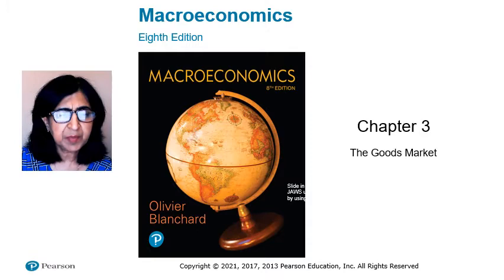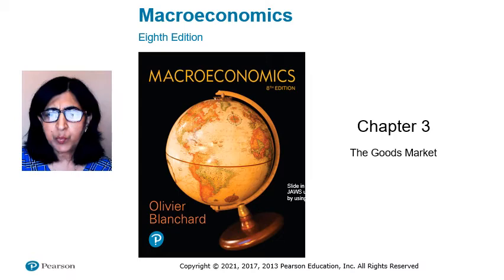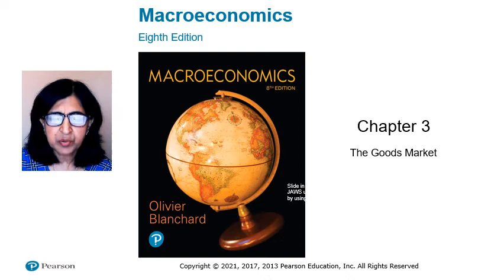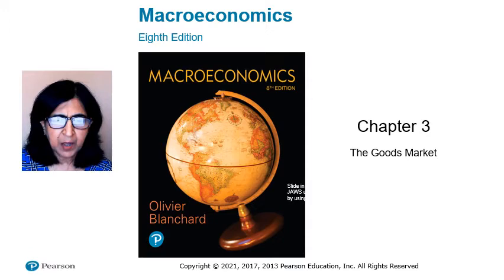Chapter 3: The Goods Market. The determination of output is the fundamental issue of macroeconomics. Output is always determined by the condition that supply equals demand. In the short run, year to year, we assume that firms are willing to supply any quantity at a given price — production automatically adjusts to changes in demand. Thus, in the short run, output is effectively determined by demand. Many factors affect demand, from consumer confidence to the state of the financial system to fiscal and monetary policy.